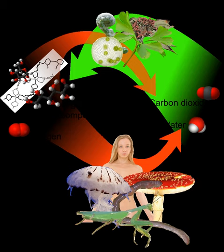The Greek term autotroph was coined by the German botanist Albert Bernhardt Frank in 1892. It stems from the ancient Greek word trophe, meaning "nourishment" or "food".